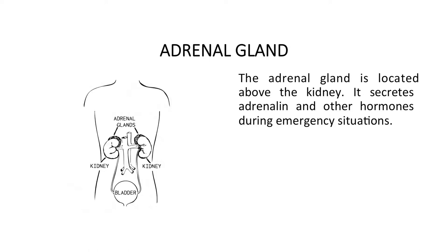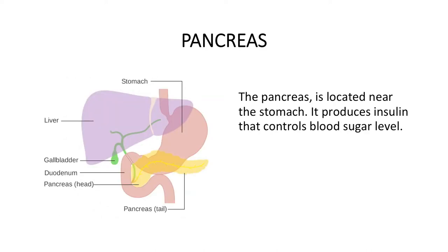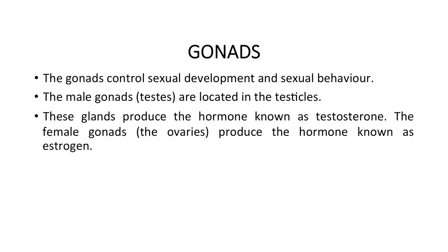The adrenal gland is located above the kidney and secretes adrenaline and other hormones during emergency situations. The pancreas is located near the stomach and produces insulin that controls blood sugar level. The gonads control sexual development and sexual behavior. The male gonads, the testes, are located in the testicles and produce the hormone known as testosterone. The female gonads, the ovaries, produce the hormone known as estrogen.